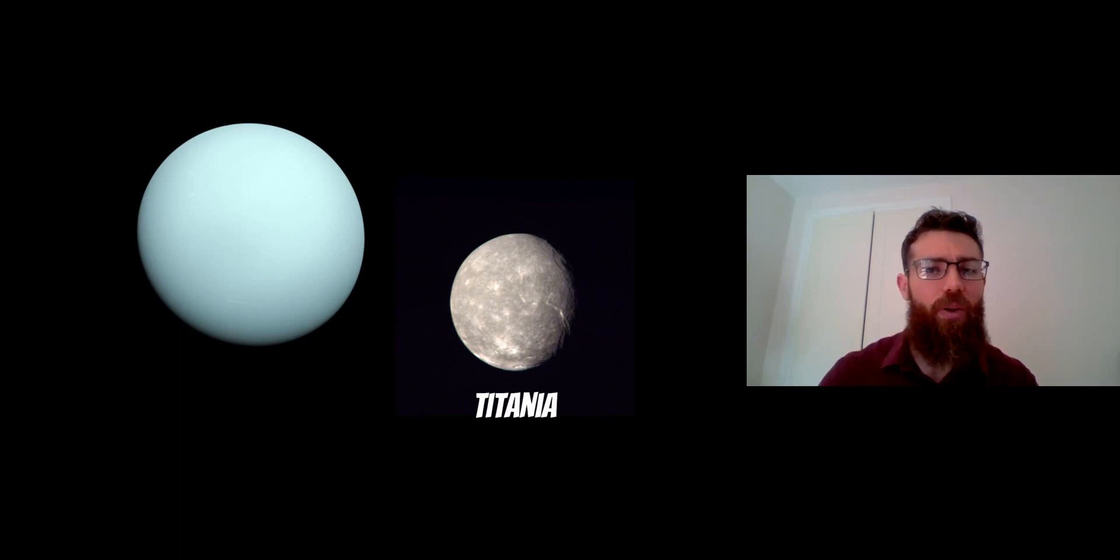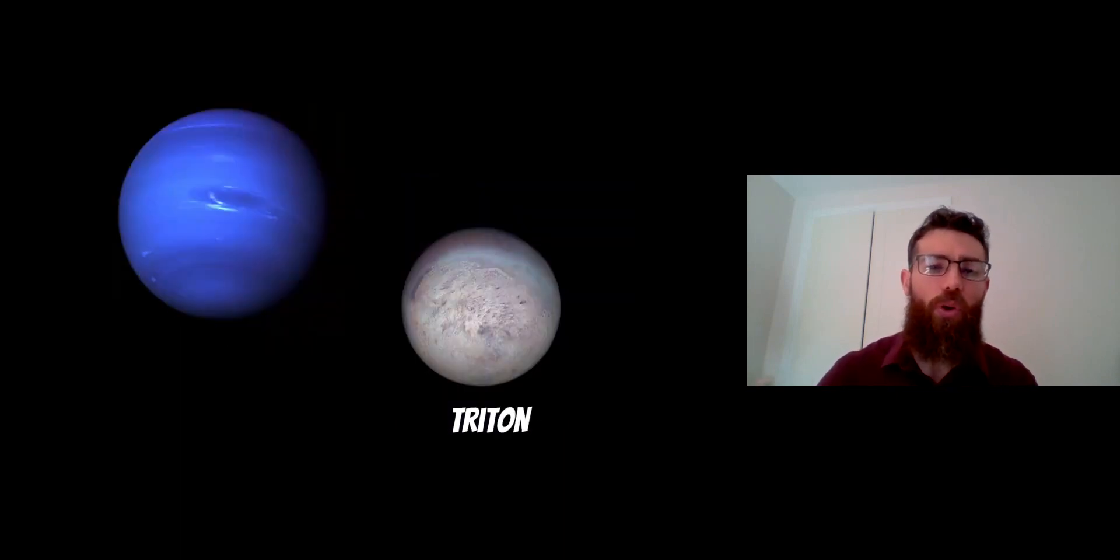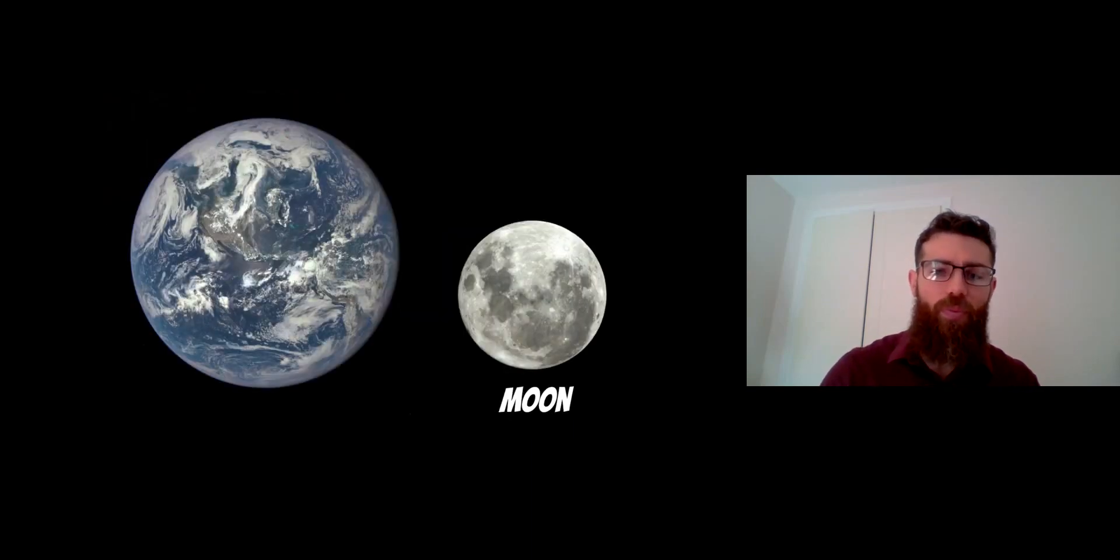Titania around Uranus also has a fairly thin atmosphere, and Triton around Neptune also has an atmosphere. However, we also have a bit of an atmosphere around the Moon. It's not a very large atmosphere, quite tenuous and very thin, but it does have some atmosphere around it.